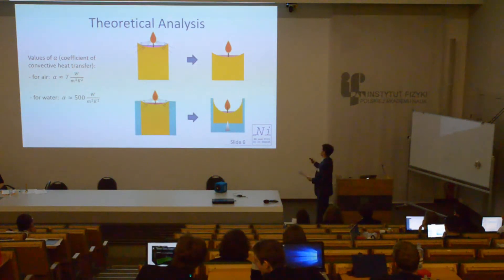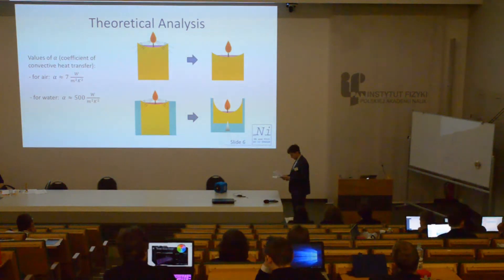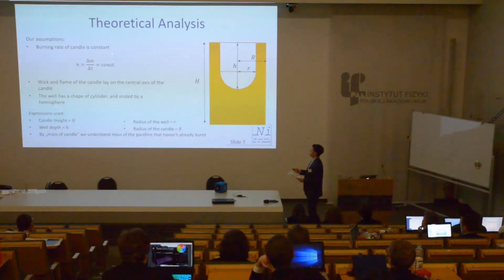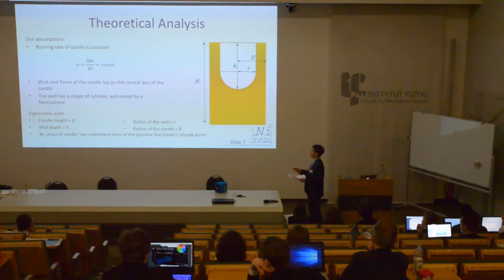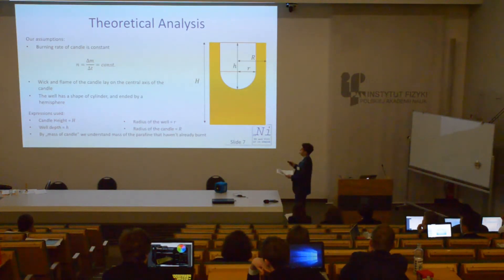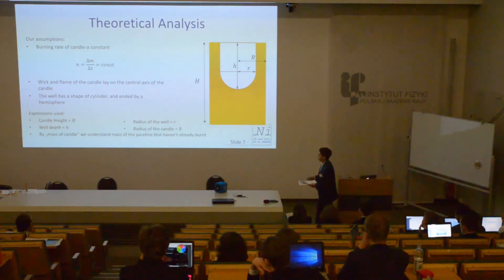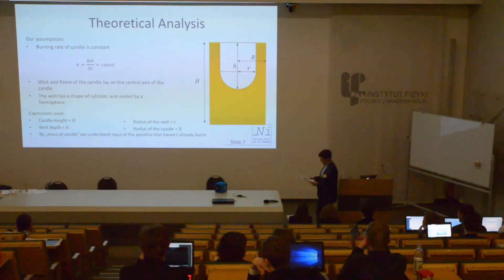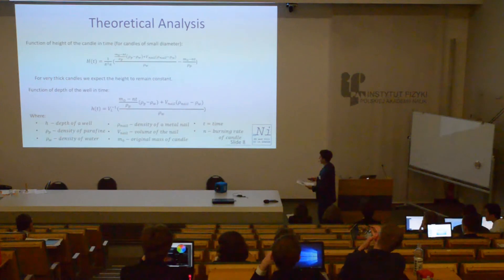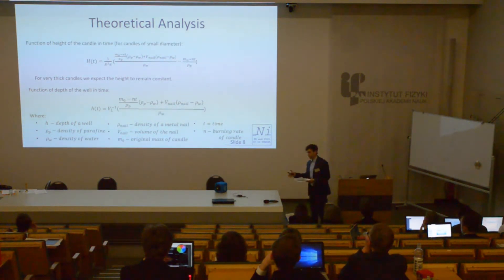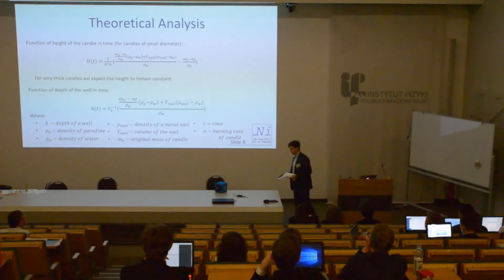Therefore, so much heat is released to the water that the outer walls of the candle remain solid and the well can be formed — a phenomenon we cannot observe in a candle burning in air. For further analysis, I must introduce a few assumptions. First, the burning rate of a candle is constant, meaning loss of mass per unit time. Second, the wick and flame lie on the central axis of the candle, and the well has the shape of a cylinder ended by a hemisphere. With these assumptions, we developed functions for well depth and, for candles of small diameter, candle height in time. For candles of larger diameter, we believe height will remain constant as the outer walls will not melt at all.